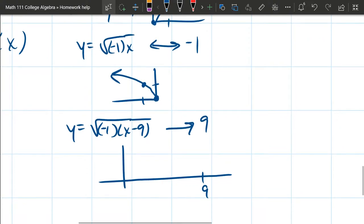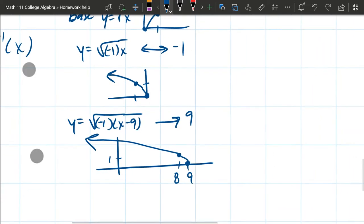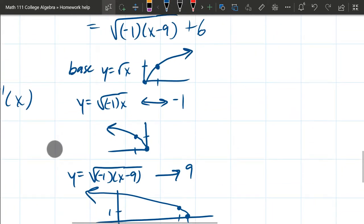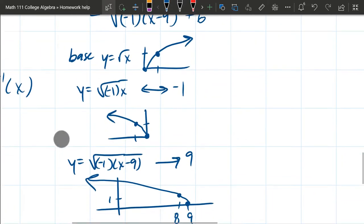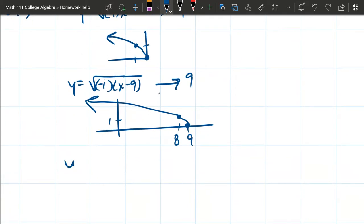So we're going way over to 9 and then over to 8 and up 1. So there's our square root graph. Last transformation is that plus 6 there. And there's a vertical shift up 6.